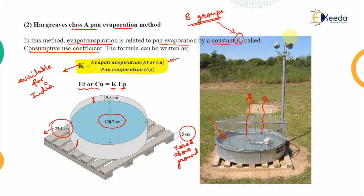The instruments placed around the pan are used to ascertain the direction of the wind, and these are known as wind vanes.